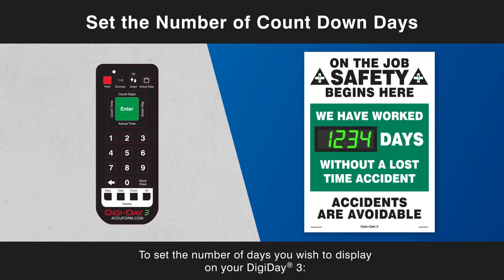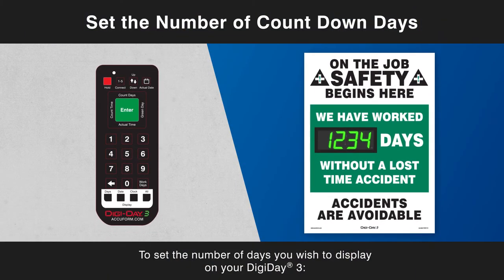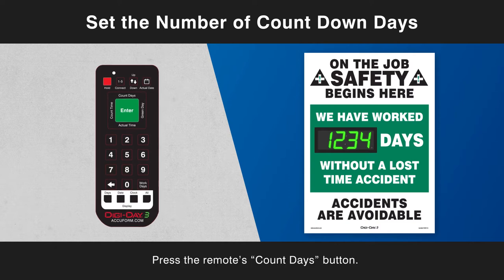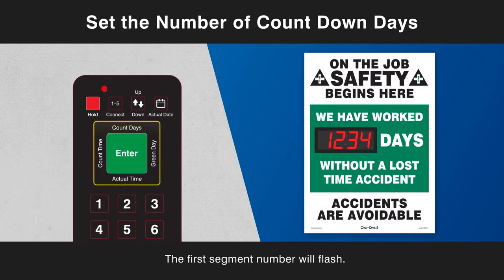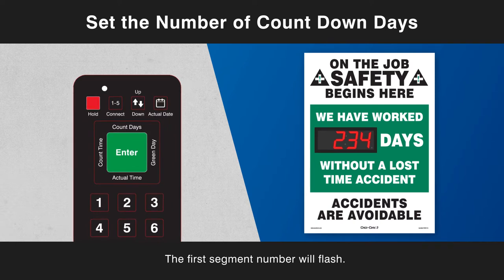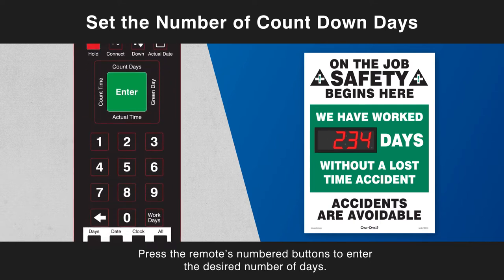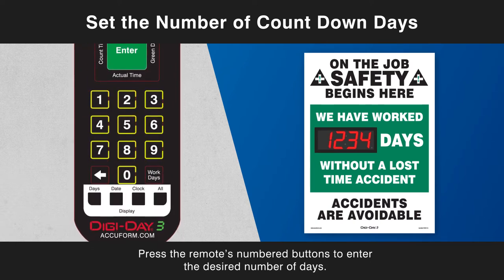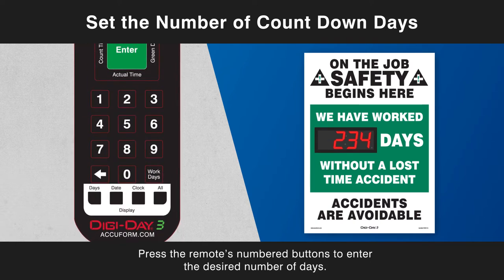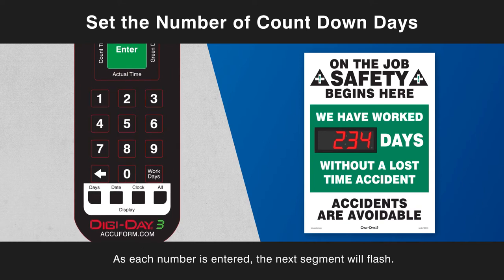To set the number of days you wish to display on your DigiDay 3, press the remote's Count Days button. The first segment number will flash. Press the remote's numbered buttons to enter the desired number of days. As each number is entered, the next segment will flash.